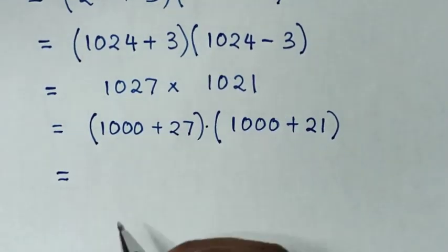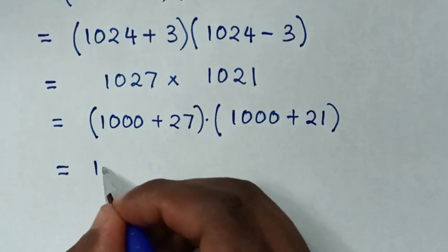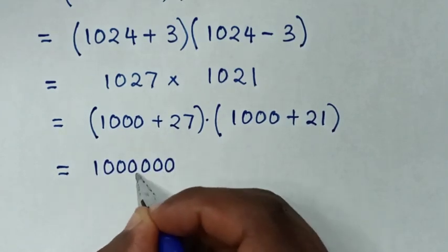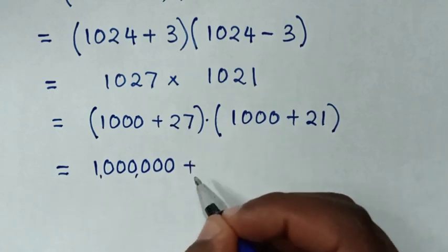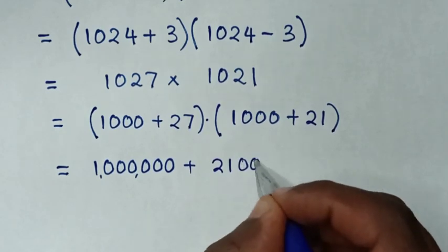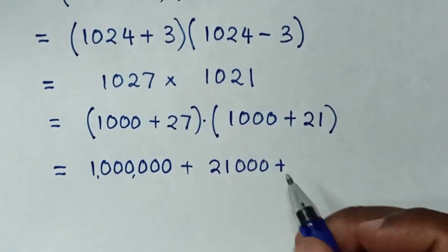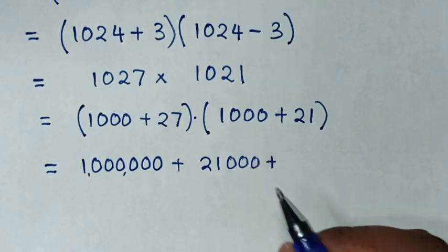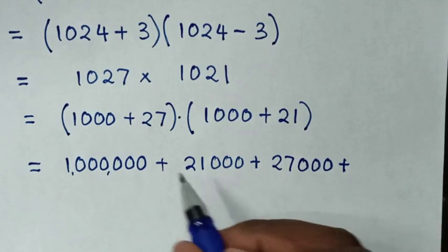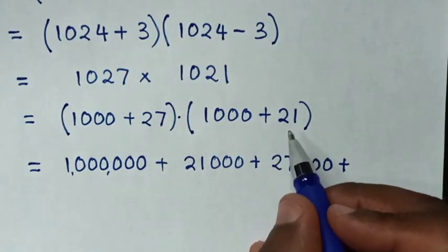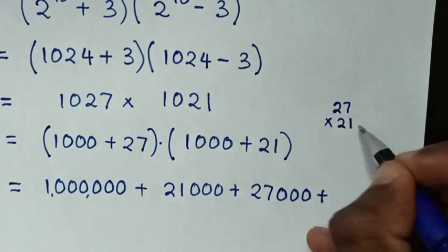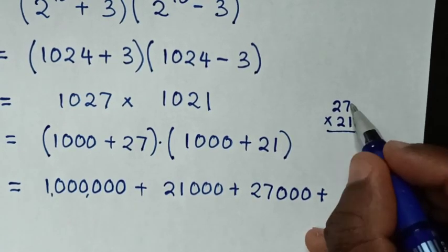Then the next step: it will be equal to 1000 times 1000 which is 1 million (6 zeros), plus 1000 times 21 which is 21,000, plus 27 times 1000 which is 27,000, plus 27 times 21.